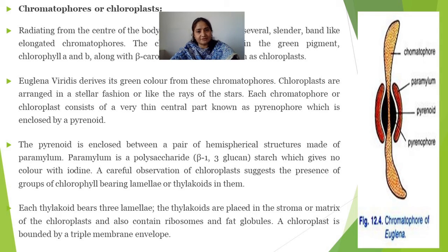Chromatophores are involved in the process of photosynthesis. Each thylakoid consists of lamellae placed in the matrix of the chloroplast, and they also contain ribosomes and fat globules.